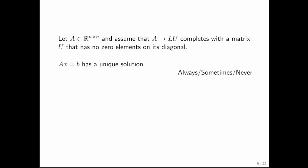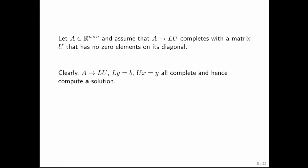The question then becomes: is this a unique solution? I'm going to argue this informally, and through a sequence of homework problems you will make that argument much more formal. Let's start by assuming we perform an LU factorization and the resulting U does not have zeros on its diagonal. That means the factorization, as well as the forward and backward substitution phases, all complete — and hence we have a means for computing a solution to Ax = b.